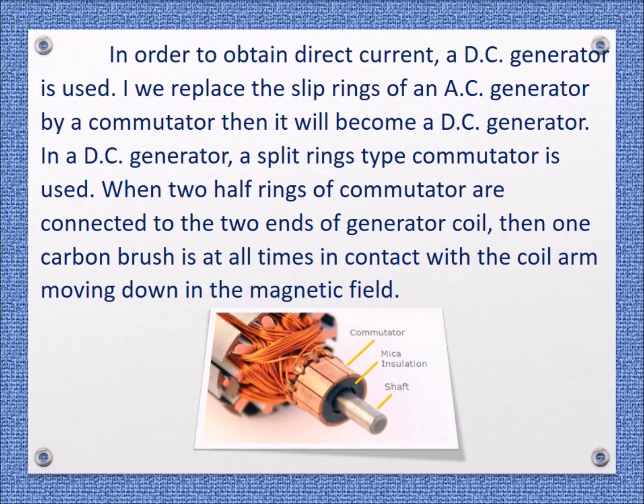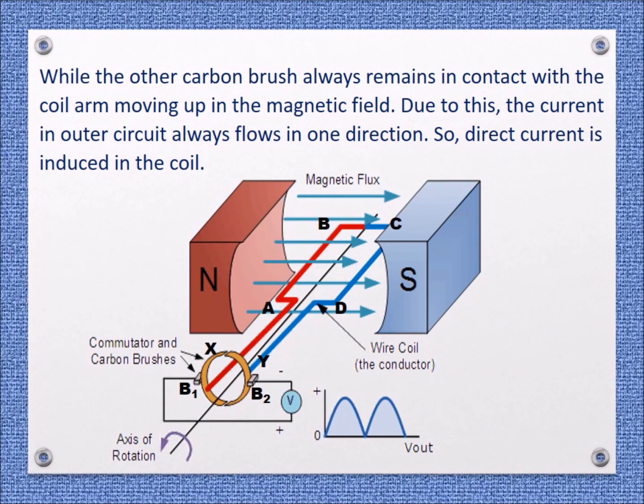When the two half rings of the commutator are connected to the two ends of the generator coil, one carbon brush is at all times in contact with the coil arm moving down in the magnetic field, while the other carbon brush always remains in contact with the coil arm moving up in the magnetic field. Due to this, the current in the outer circuit always flows in one direction, so direct current is produced.